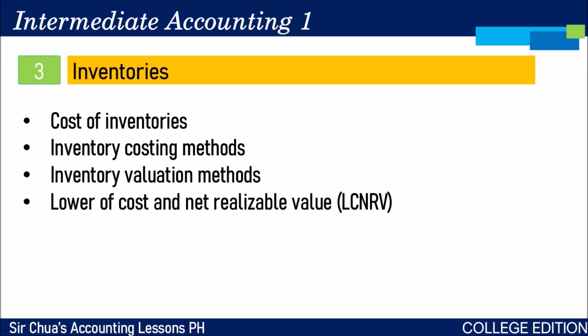For inventories, we'll discuss how to properly compute and what to recognize as the cost of inventories and what shall be included in the books of accounts as cost of inventories. We'll also cover different inventory costing methods like specific identification method, first-in first-out, weighted average, and moving average method, as well as inventory valuation methods like gross profit and retail method, and the proper presentation of inventories in the balance sheet — which is the lower of cost and net realizable value.